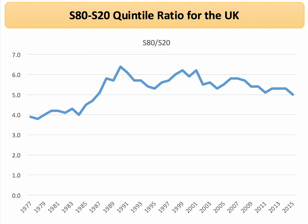So the richest 20% were earning, after taxes and benefits, more than six times the income of the bottom 20%. Now since then it's ebbed and flowed — it's risen and fallen — but on average the S80-S20 ratio has come down for the UK. It's now just below five. I'll put that in some context with other countries in just a second.